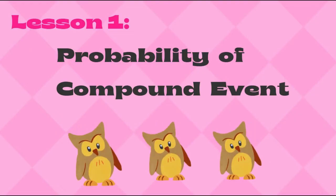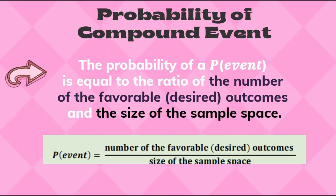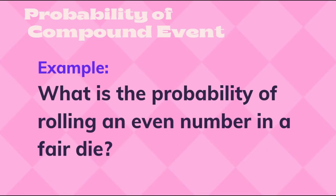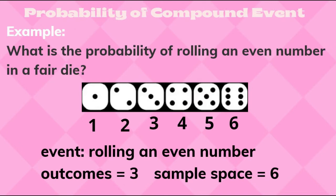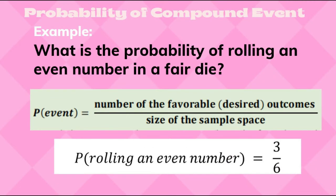Let's proceed to the probability of a compound event. The probability of an event is equal to the ratio of the number of favorable outcomes and the size of the sample space. Example: what is the probability of rolling an even number on a fair die? The event is rolling an even number — there are 3 outcomes: 2, 4, and 6. The size of the sample space is 6 because a die has 6 possible outcomes: 1, 2, 3, 4, 5, 6. Therefore, the probability of rolling an even number is equal to 3 over 6.